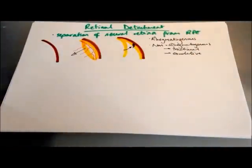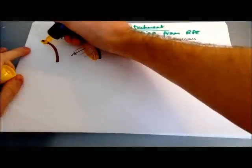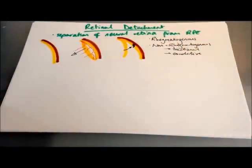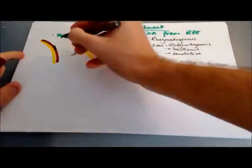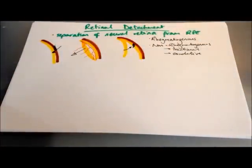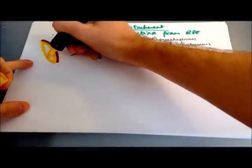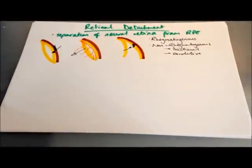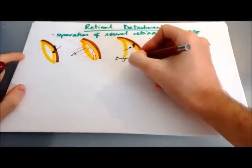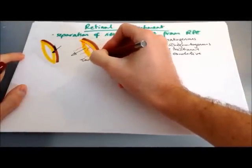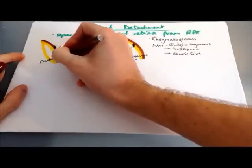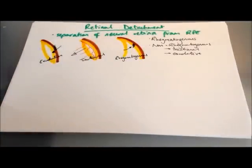Finally, we've got exudative retinal detachment, also known as serous. This is when damage to the retinal pigment epithelium — the lower layer — allows retinal fluid to seep into the space underneath the neural retina, and that pushes the neural retina off the retinal pigment epithelium. So it doesn't pull away — it pushes away in exudative.